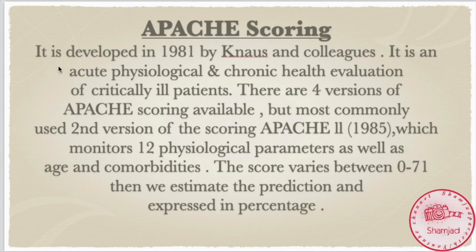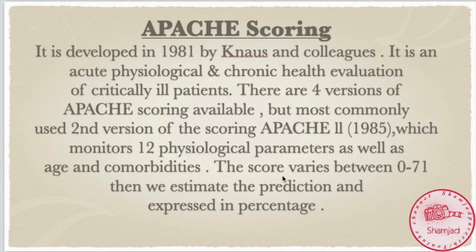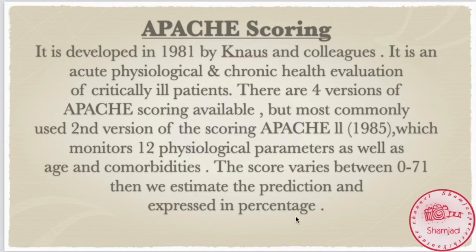The most frequently used scoring systems are APACHE and SAPS. APACHE scoring was developed in 1981 by Knaus and colleagues. It is an Acute Physiological and Chronic Health Evaluation of critically ill patients. There are four versions available, but the most commonly used is the second version, APACHE 2, developed in 1985, which monitors 12 physiological parameters as well as age and comorbidities. The score varies between 0 to 71, and the prediction is expressed as a percentage.